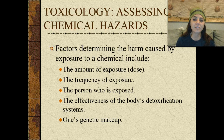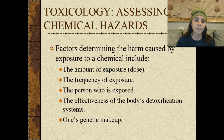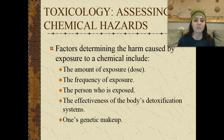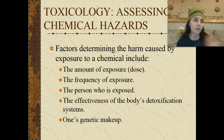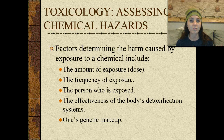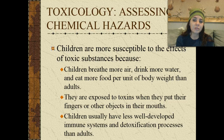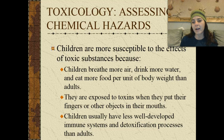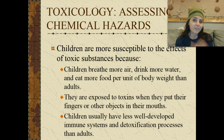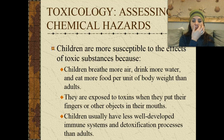When assessing chemical hazards, factors determining the harm caused by exposure include: the amount of exposure or dose received, the frequency of exposure, the person who is exposed, the effectiveness of the body's detoxification systems, and one's genetic makeup. Everybody responds differently — one person might be fine while another has a severe reaction. Children are actually the most susceptible to toxic substances because they breathe more air, drink more water, and eat more food per unit of body weight than adults, they are exposed to toxins by putting fingers and objects in their mouths, and they have less well-developed immune systems and detoxification processes.